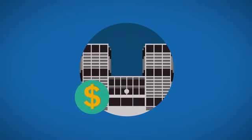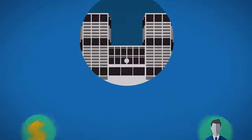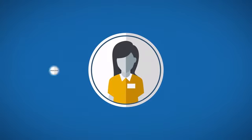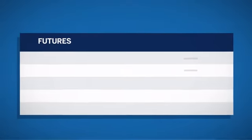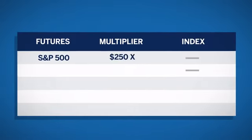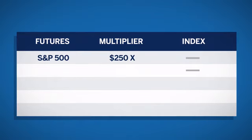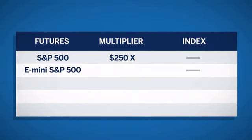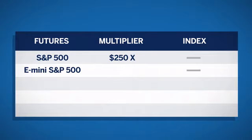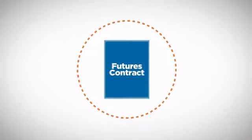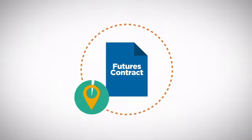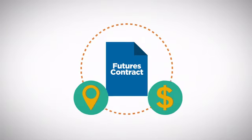The exchange defines the contract size to meet the needs of the market participants. For example, participants who wish to take a speculative or hedging position in the S&P 500 futures contract but cannot risk the exposure of that size contract — 250 times the S&P 500 — can instead use the E-mini S&P 500 futures contract to gain the exposure at 50 times the S&P 500 index.